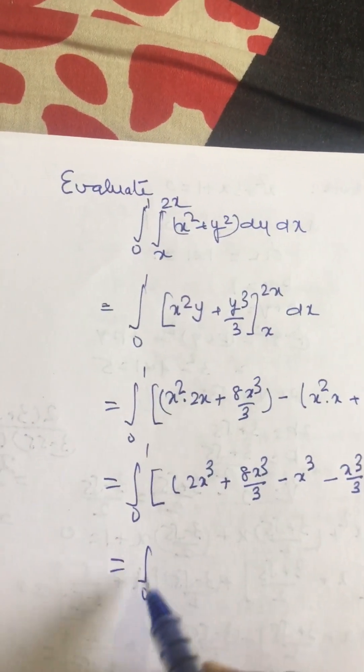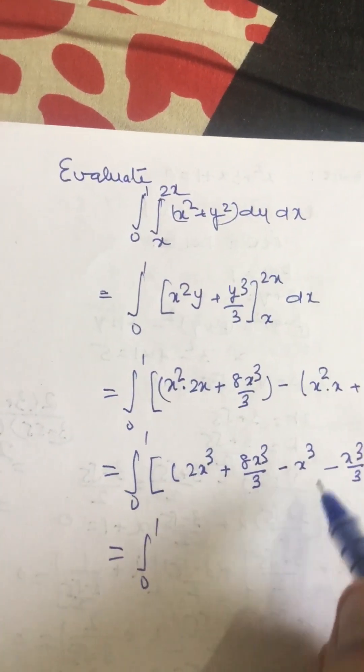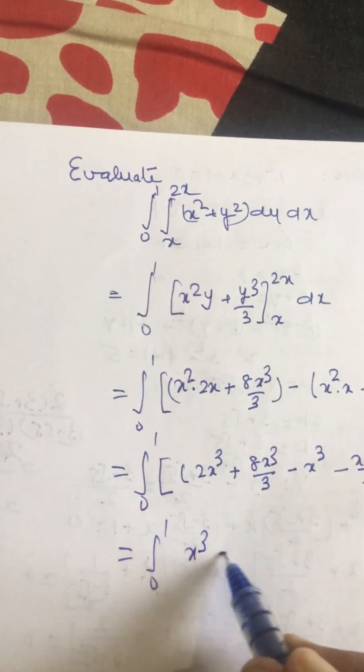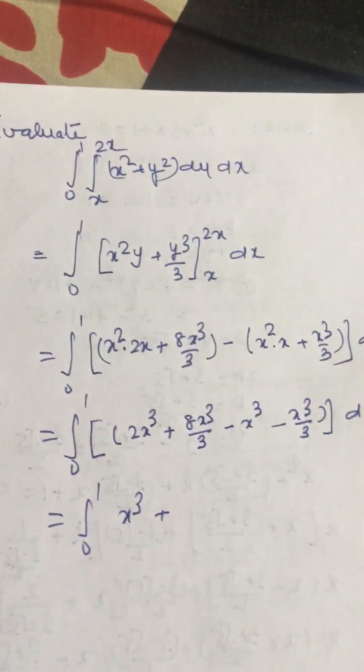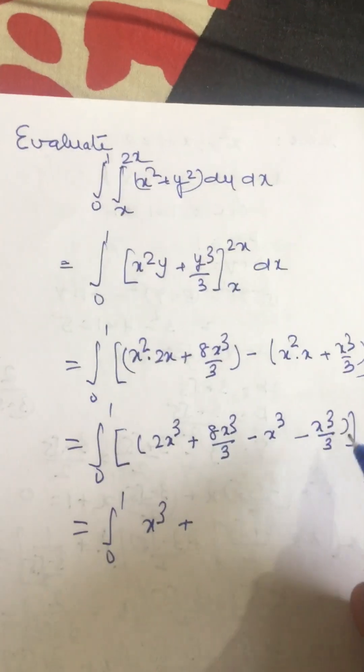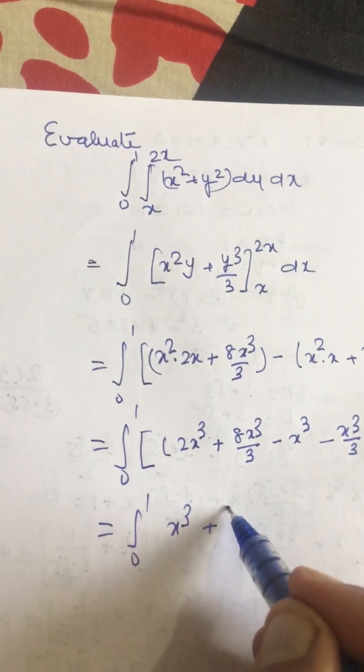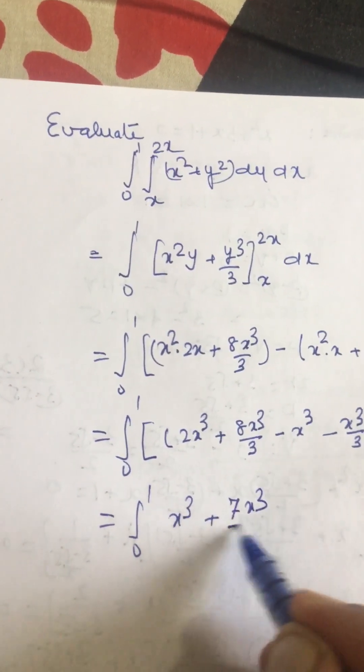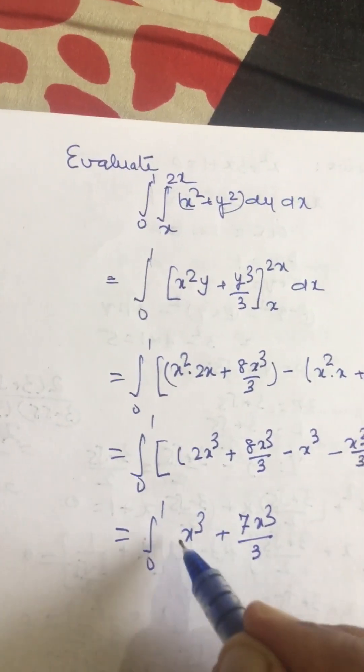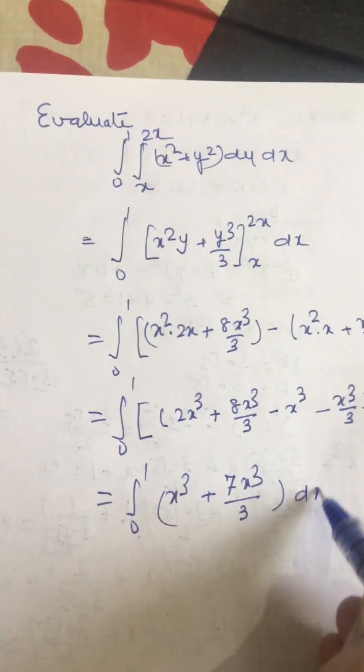So this we can write 0 to 1. 2x cube minus x cube is x cube, and this is 8x cube by 3, so this is 7x cube by 3 dx.